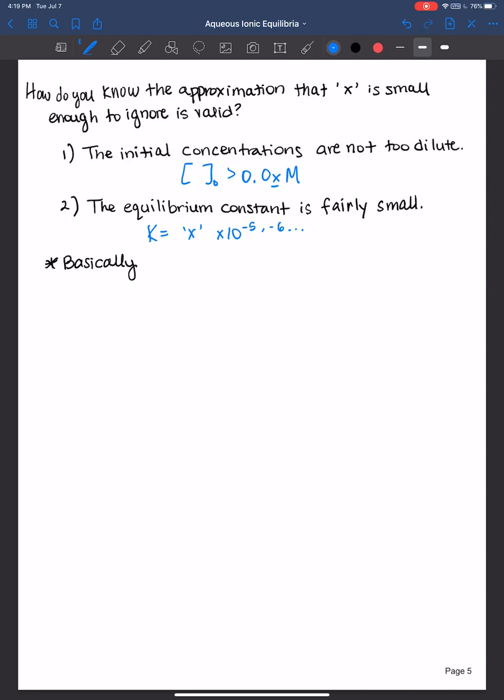So basically, the initial concentration should be 10 to the 2nd to 10 to the 3rd, 100 to 1,000 times greater than K for us to ignore X. And then, like I said, if it's a buffer system, then you can use the Henderson-Hasselbalch equation as a shortcut.